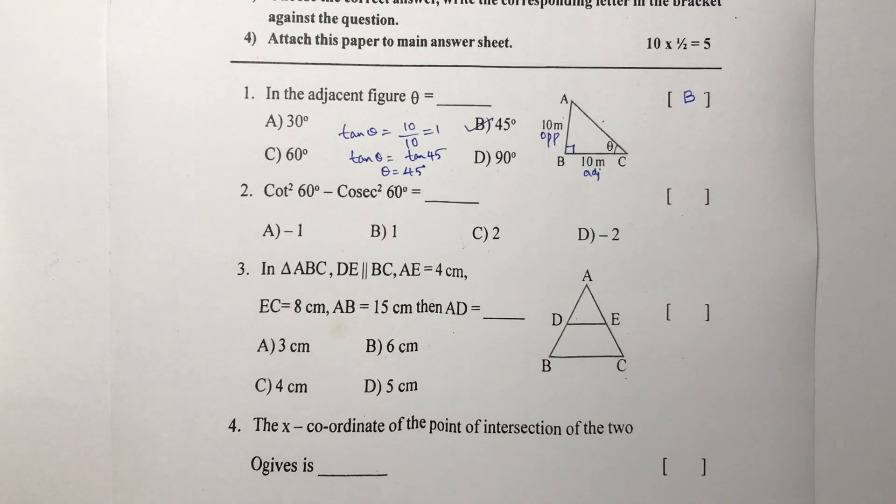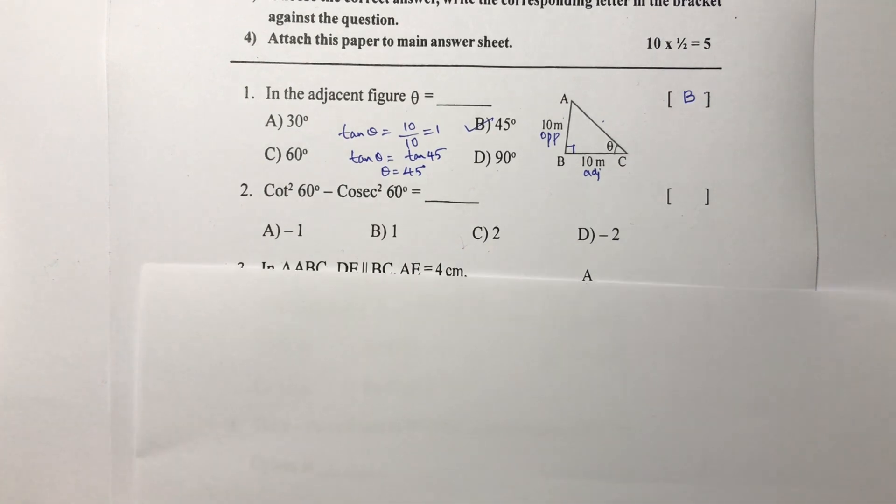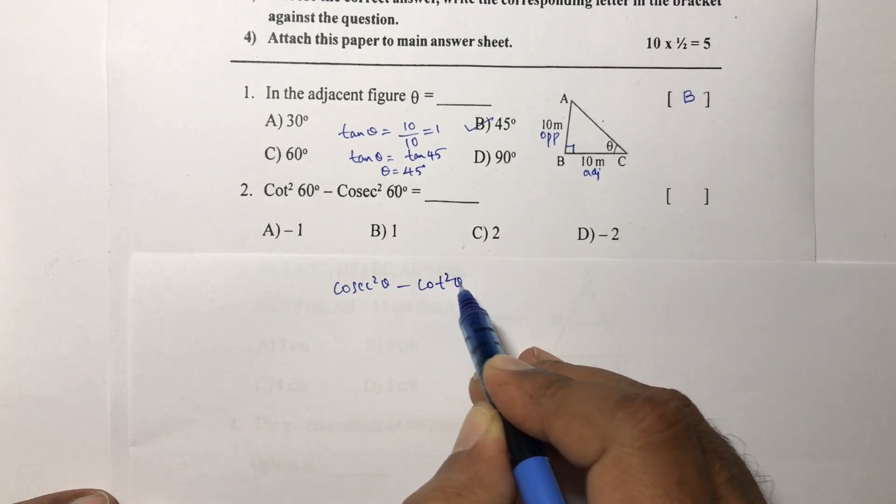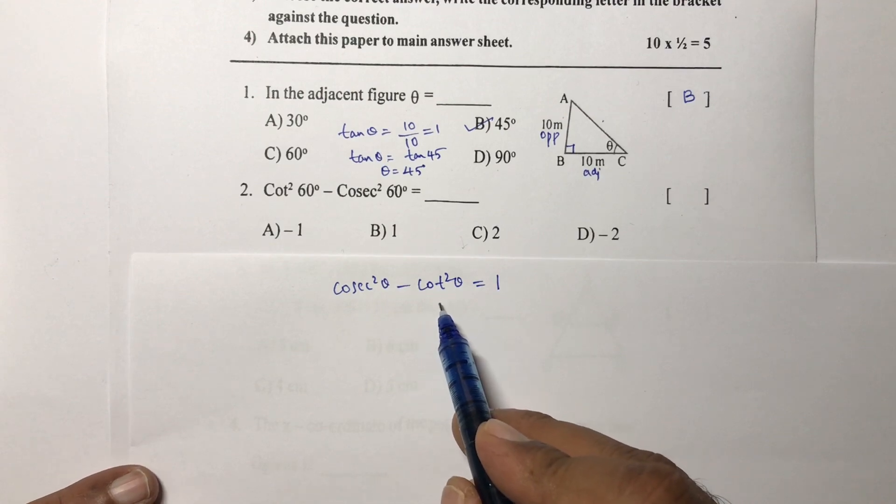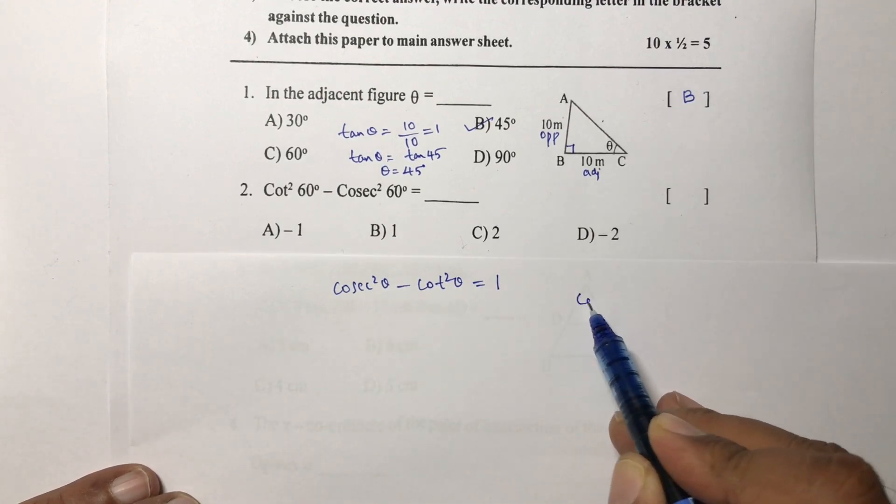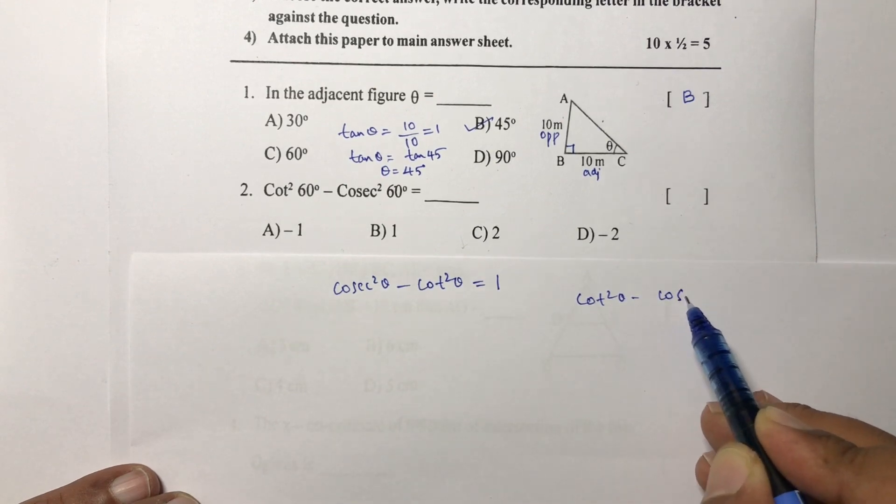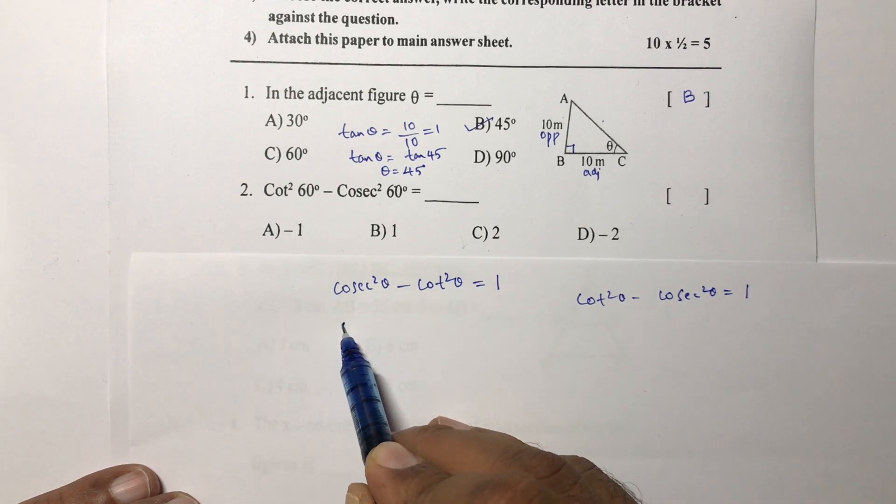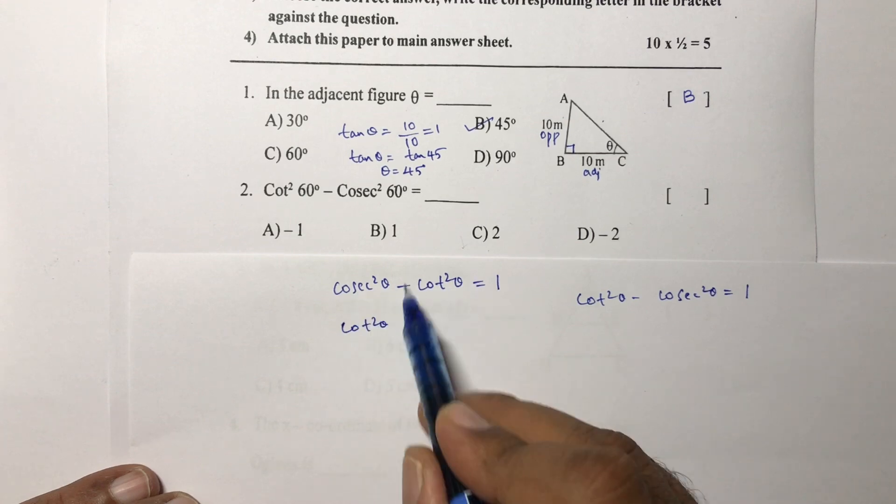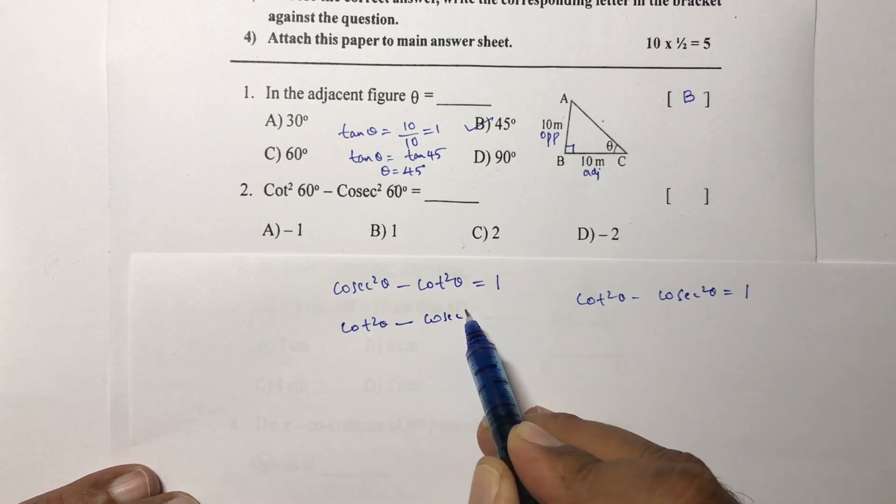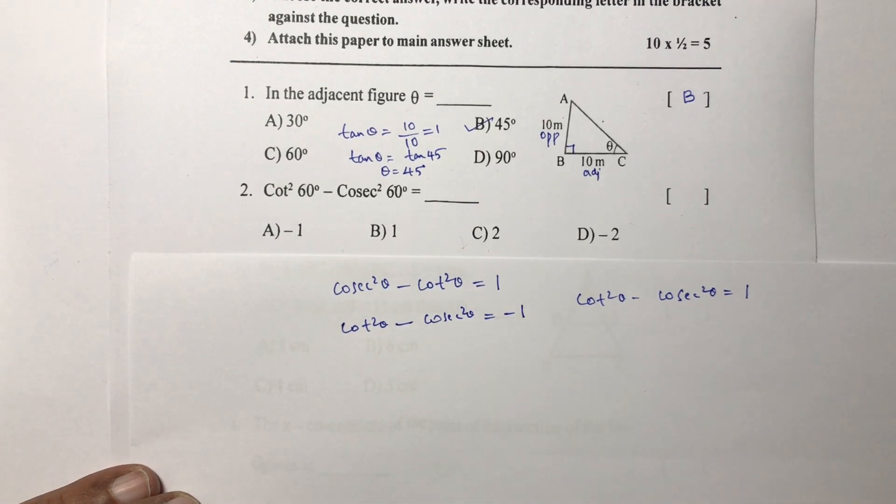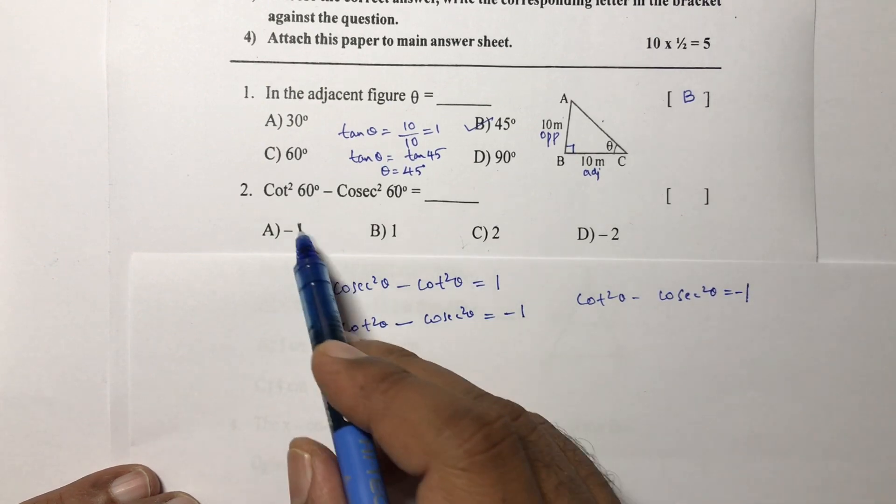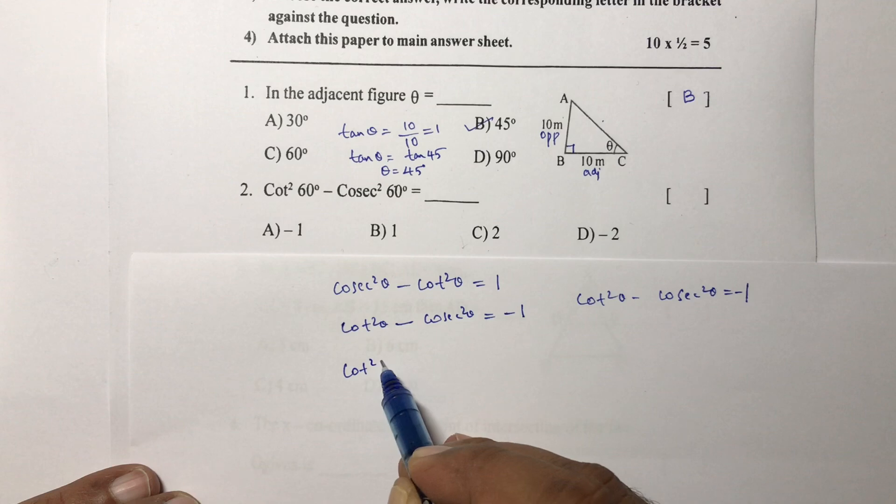Second question: cot²θ minus cosec²θ. The identity is cosec²θ minus cot²θ equals 1. If I write this one like cot²θ minus cosec²θ, because we transpose these values, cot²θ minus will become plus and this one minus cosec²θ, its value will be minus 1. So cot²θ minus cosec²θ value is minus 1.